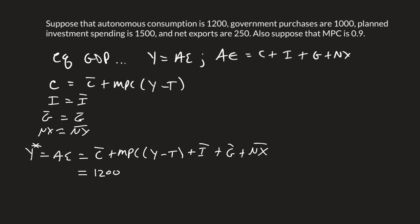We've got $1,200 for autonomous consumption. That was given up top here, right? This is C̄. MPC was given at 0.9. Y is our unknown. Taxes are zero because it's not given. Investment was $1,500. Government purchases was $1,000. And net exports was $250.